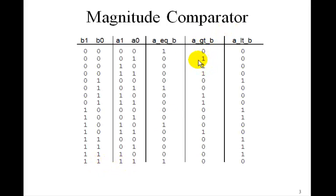A greater than B will be 1 if A is greater than B. That is 1 is greater than 0, 2 is greater than 0, 3 is greater than 0, 2 is greater than 1, 3 is greater than 1, and 3 is greater than 2. So those are where A greater than B is 1.